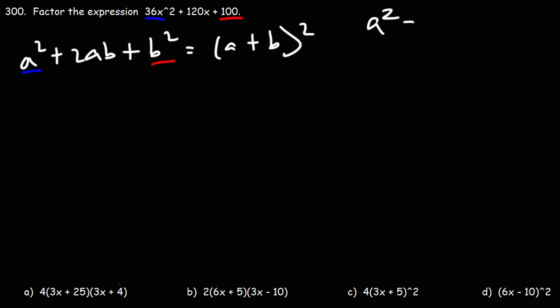If a squared is 36x squared, what's a? The square root of 36 is 6. The square root of x squared is x, so a is 6x. Now, if b squared is 100, what's b? The square root of 100 is 10. So now we have the answer: a is 6x, b is 10, and we can square it.